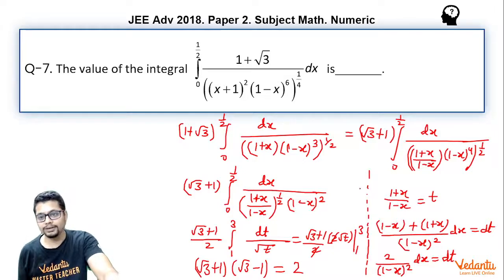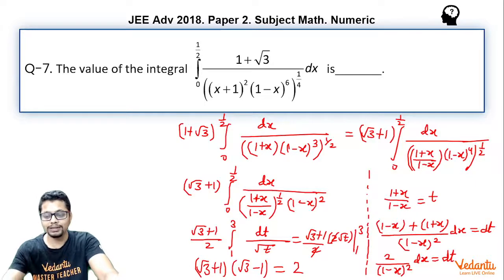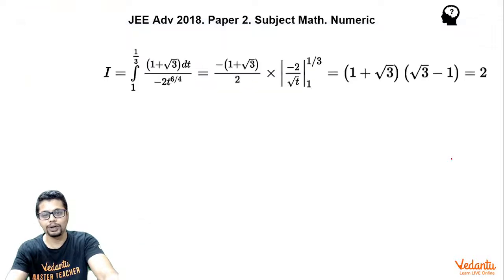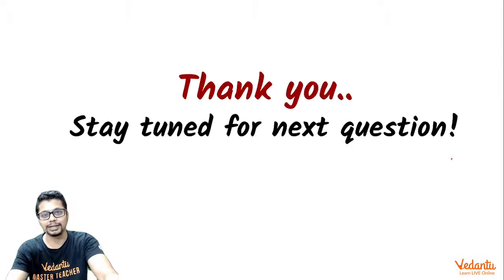Alternatively, rather than dividing and multiplying by (1 − x), you could have done the same for (1 + x) as well, and would have got a similar expression as shown in the solution, ultimately arriving at the same answer. So the answer is 2. That's all from my side. Thanks for listening.